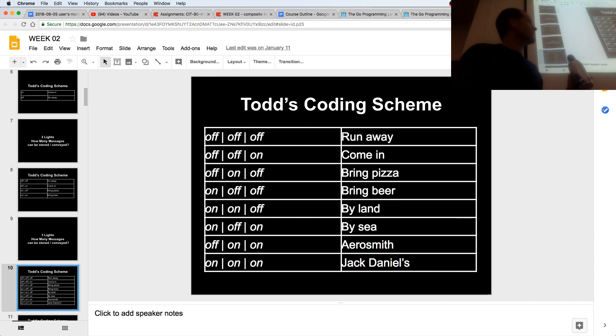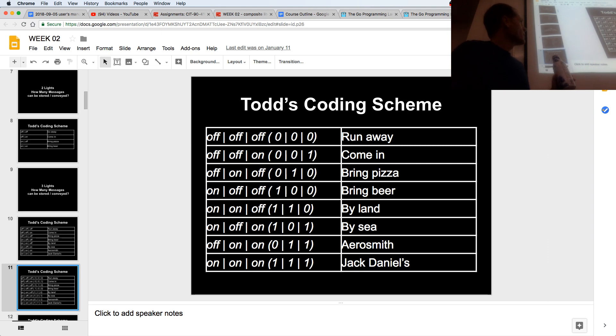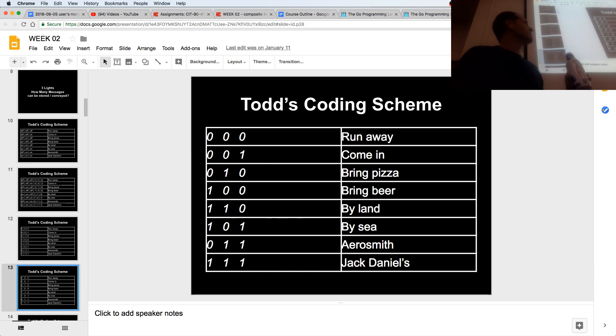It doesn't matter. Make up our own coding scheme, right? But instead of writing all that off and on, I could just write zero and one. Zero for off, one for on, because off and on is like too many letters to keep writing over and over. So that's why we see all those zeros and ones with computers. Off off off, run away. Off off on, come in. Man, it all comes down to computers run on electricity, electricity can be on or off, and just circuits or switches in on-off states.